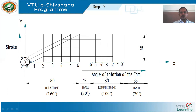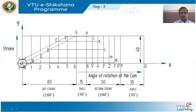Like this we can determine the intersecting points during outstroke and return stroke under cycloidal motion. Let me name these intersecting points A, B, C, D, E, F, G — during outstroke — and H, J, K, L, M, N, P — during return stroke. P coincides at zero-dash, similar to how A coincides at zero. This is the method to find the intersecting points.